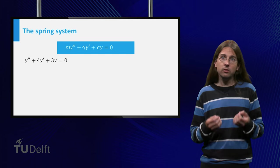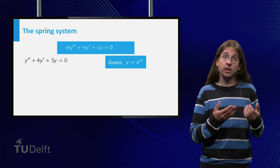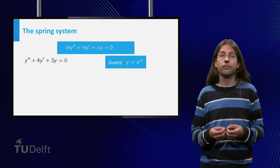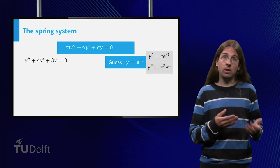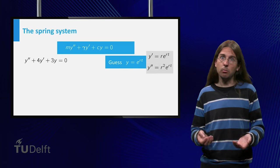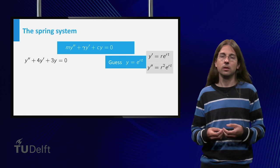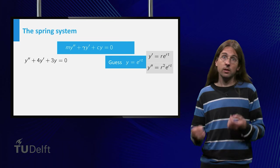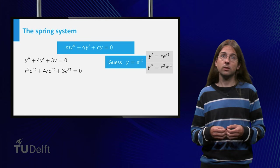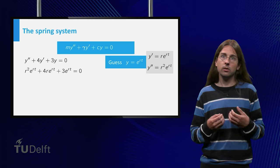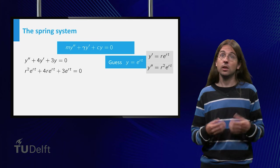Let us try to find the solution of the form y equals e to the rt. Then y prime equals r·e to the rt and y double prime equals r squared·e to the rt. Plugging this into the equation gives r squared·e to the rt plus 4r·e to the rt plus 3·e to the rt equals zero.